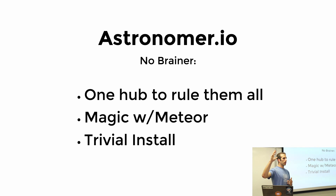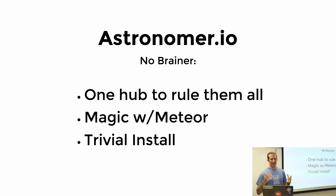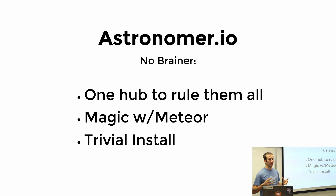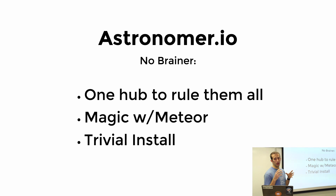Raise your hand if you know what Astronomer is. Okay, so nowadays data is king, right? Everyone wants to get as much data as possible so that we can make informed decisions and show investors hockey stick graphs. Astronomer is a tool to simplify analytics, because there are a lot of solutions out there — Google Analytics, Mixpanel, Keen.io. With Astronomer, you can send all your analytics data to a single spot and they distribute it out to the rest. They're one hub to rule them all.